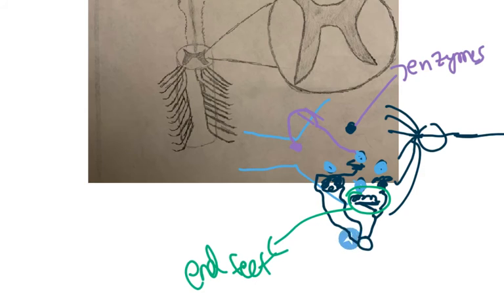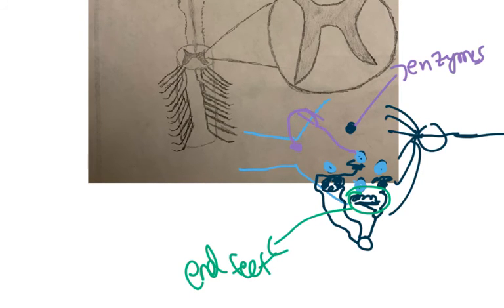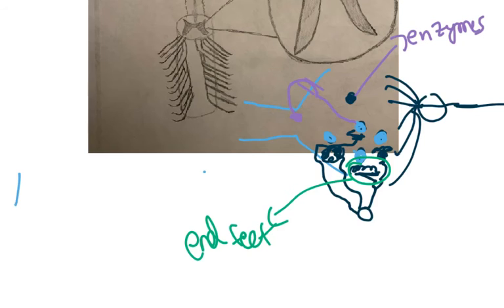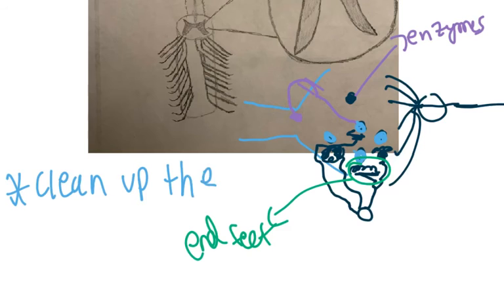The astrocyte breaks down the neurotransmitters and puts those broken parts back into the presynaptic neuron, where they can be reformed into neurotransmitters again. This is really important — we don't want random neurotransmitters just sitting in the synapse constantly stimulating the postsynaptic neuron. So another job of astrocytes is to clean up the synapse in the central nervous system.